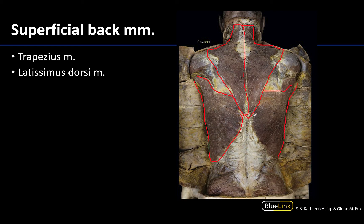The latissimus dorsi is more inferiorly placed. It will also have proximal attachments on spinous processes, but also on the thoracolumbar fascia that you can see right here in the lower portion of the back, more towards the midline. Importantly, its distal attachment extends all the way to the proximal humerus, which we can't see well in this particular image, so that distal attachment isn't visible here.